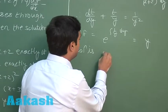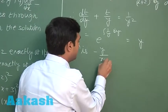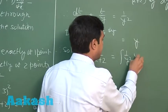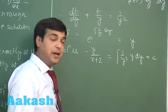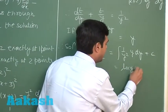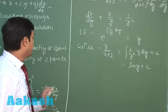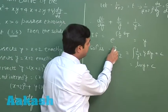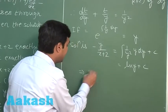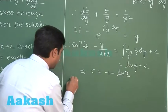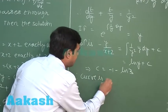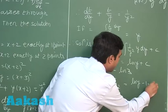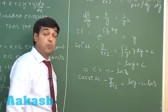The solution is t·y = -1/(x+2) · y = ∫(1/y)dy = log y + C. This curve passes through (1, 3), so substituting y = 3 and x = 1, we find C = -1 - log 3. Therefore the curve is: -y/(x+2) = log y - 1 - log 3.